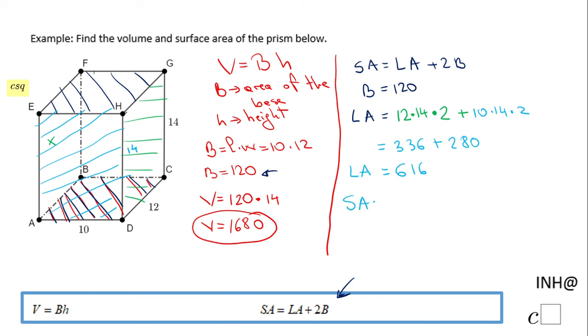This is the lateral area and I can go back now in the surface area, and that will be this lateral area which is 616 plus two bases, or two times 120. So that will be 616 plus 240, and the final answer for this will be 856 square units.